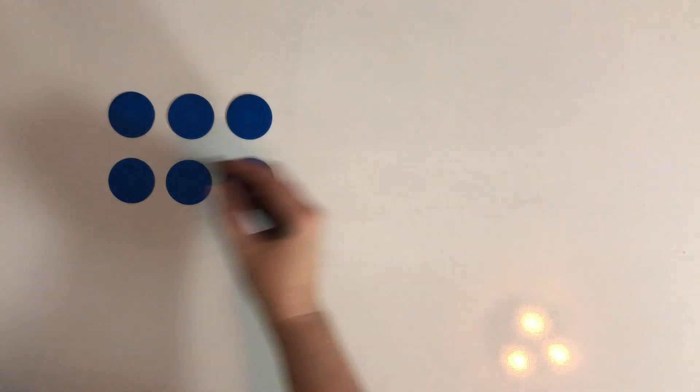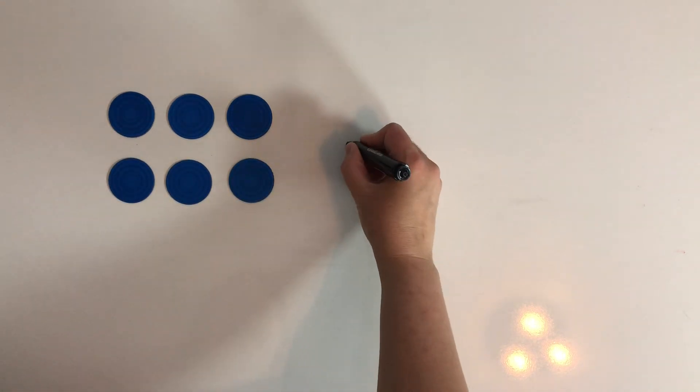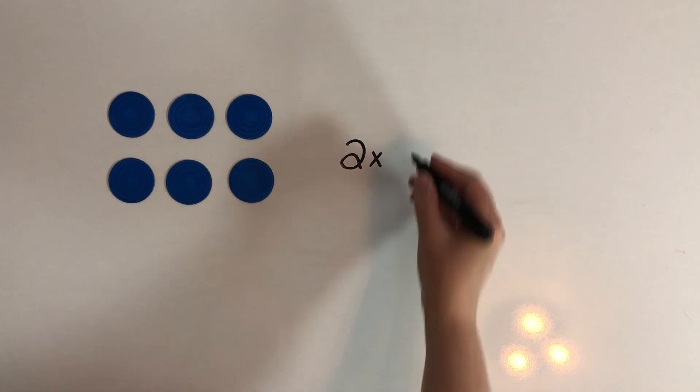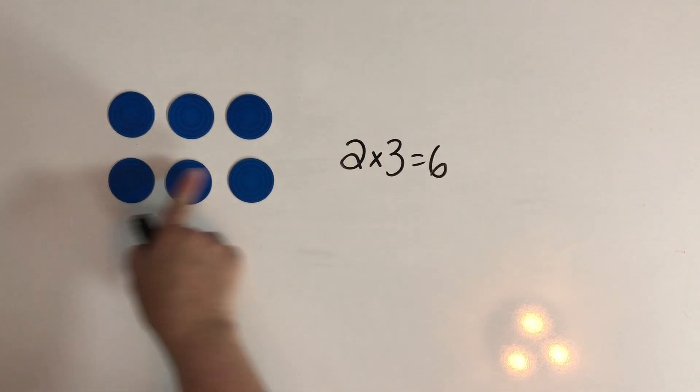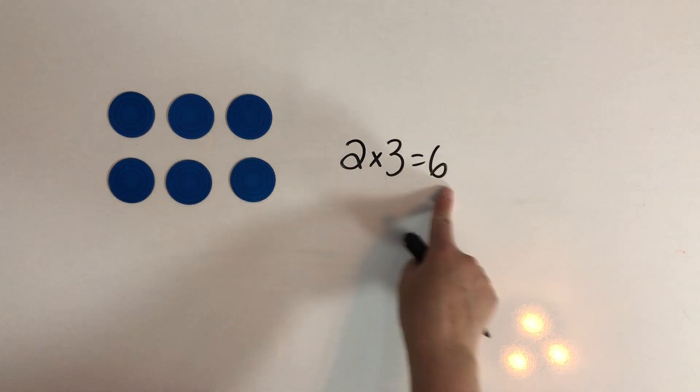Here we have an array and we see that it's two rows of three and we have six. So there's one row, there's two rows, and there's three in each row so we have six.